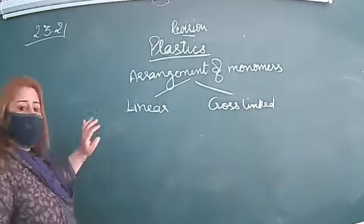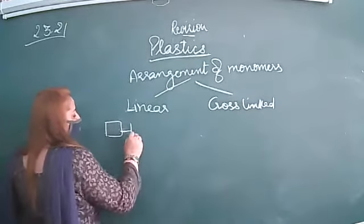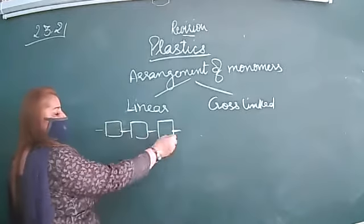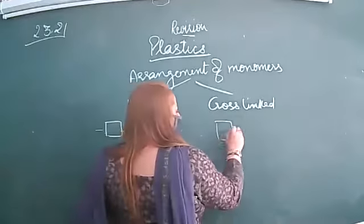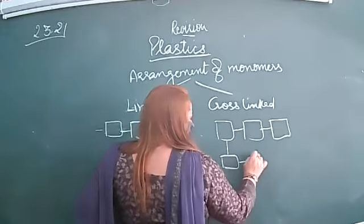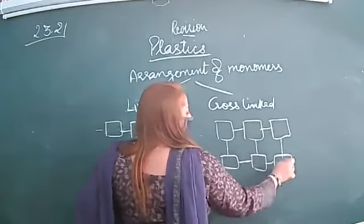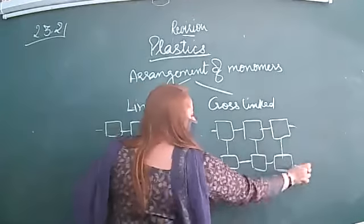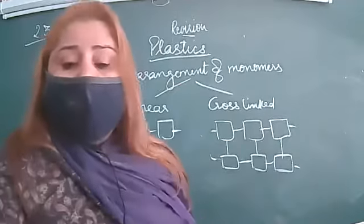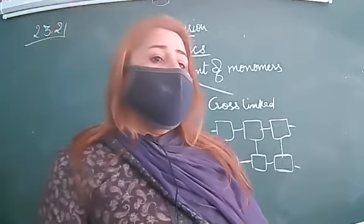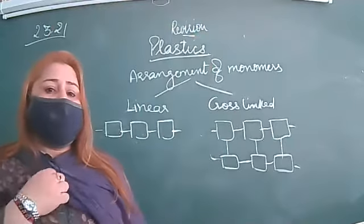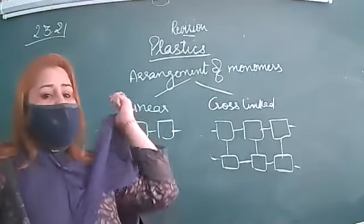Under linear plastic, when we are combining the small units like this — these are called monomers. Cross-linked means they are combined in a cross-linked pattern. Linear plastic is also called thermoplastic, whereas cross-linked plastics are also called thermosetting plastic.